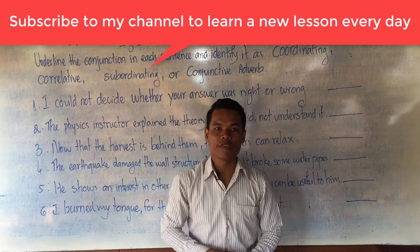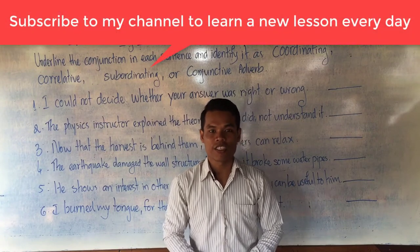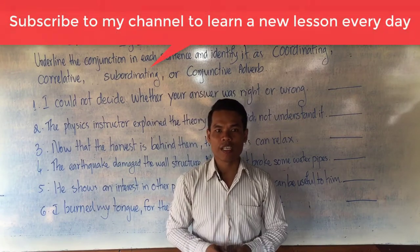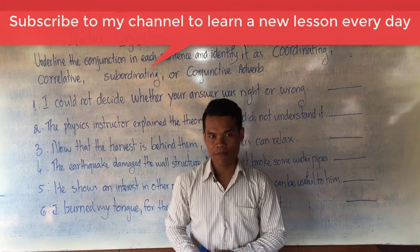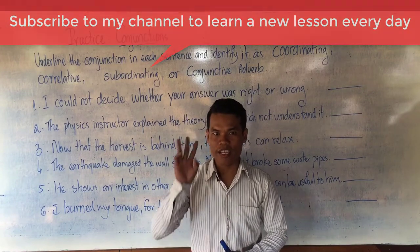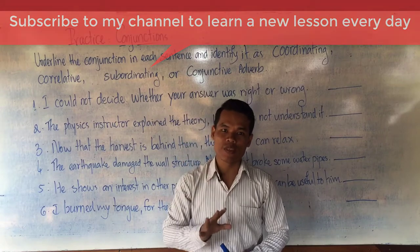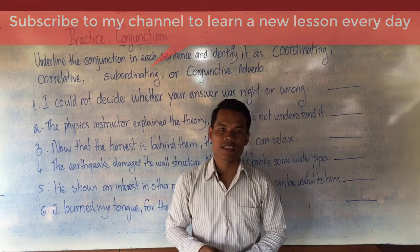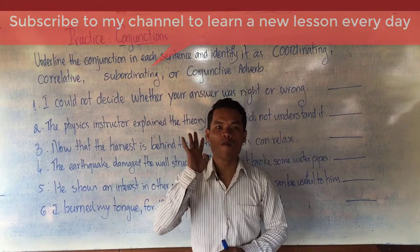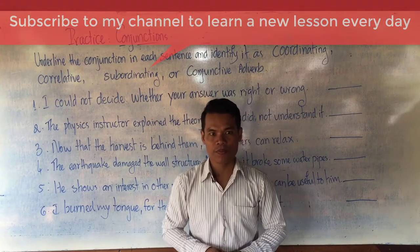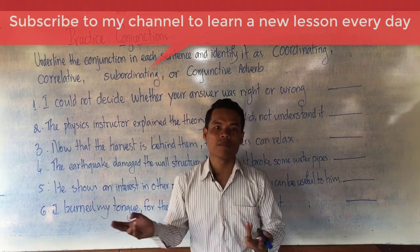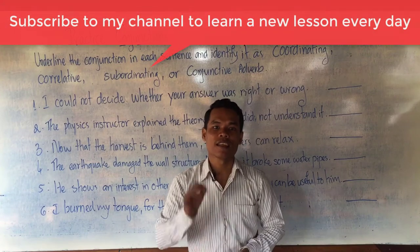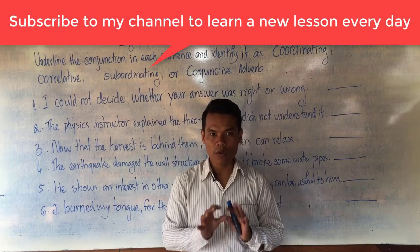Hello everyone, today I'm going to teach you the practice of conjunctions. You already learned conjunctions — can you tell me how many types there are in English? Actually there are only three, but because of conjunctive adverbs we add a conjunction type. That's why conjunctive adverb is considered a conjunction, so totally there are four types of conjunctions in English: coordinating conjunction, correlative conjunction, subordinating conjunction, and conjunctive adverb.